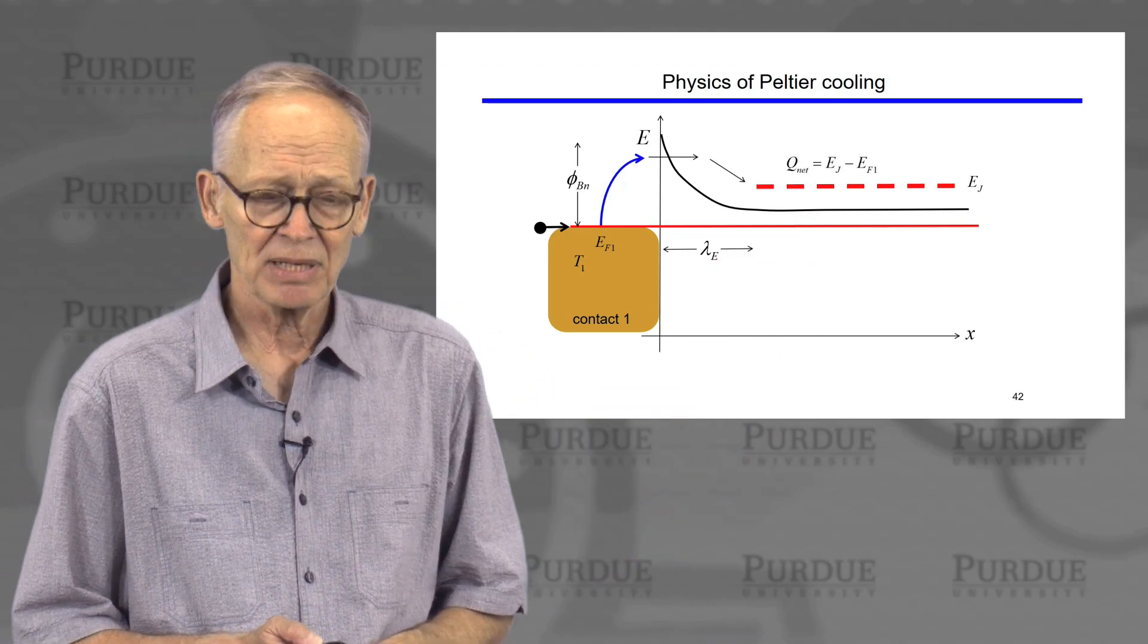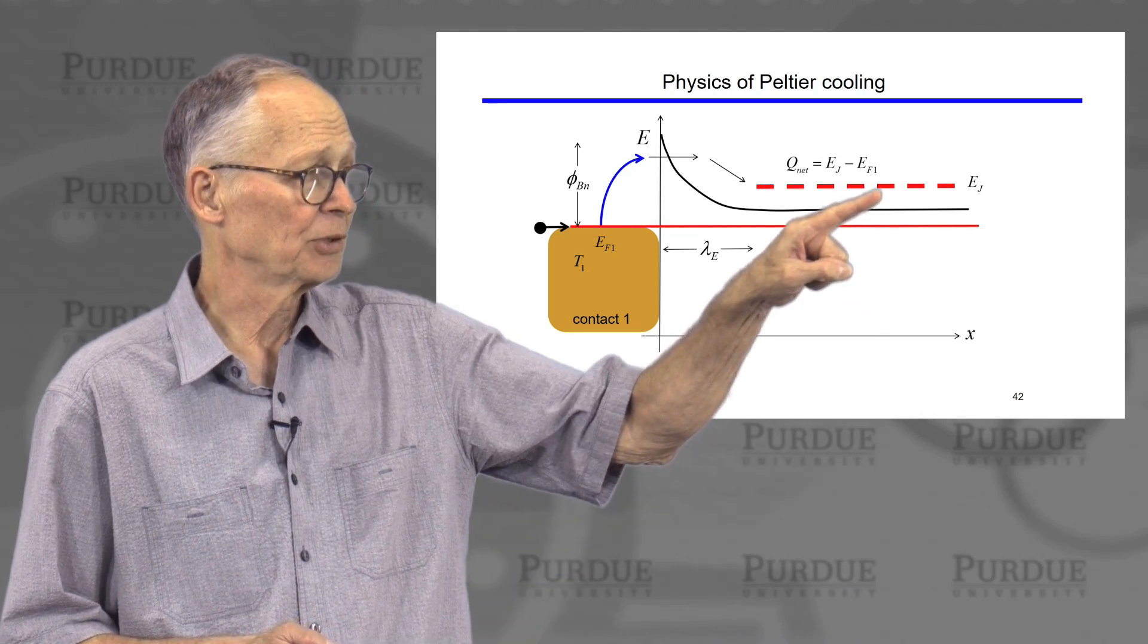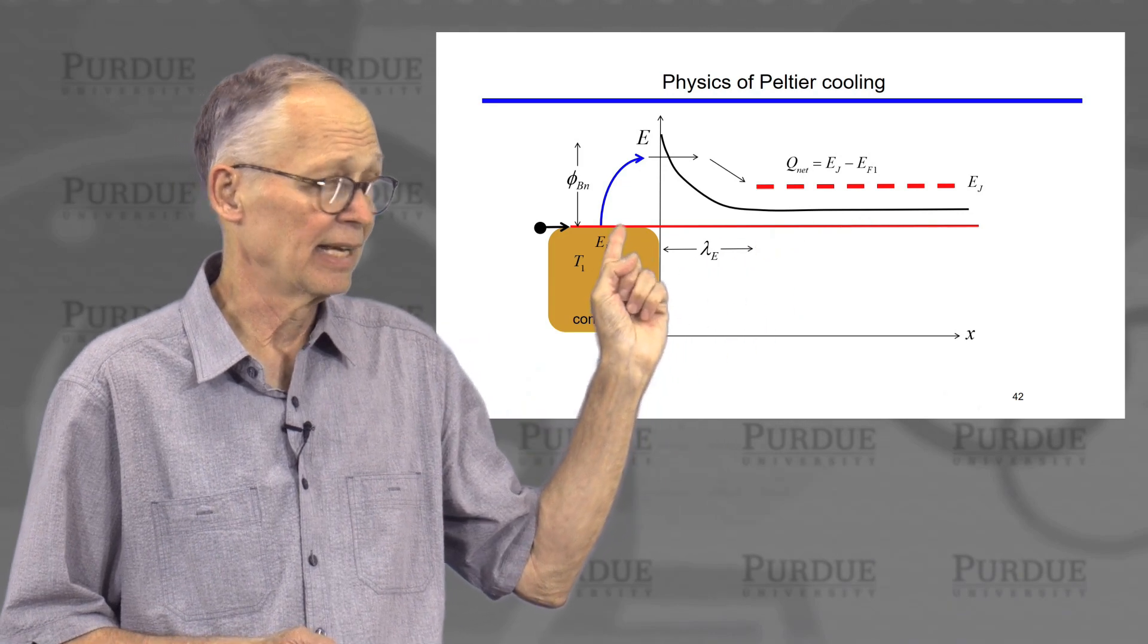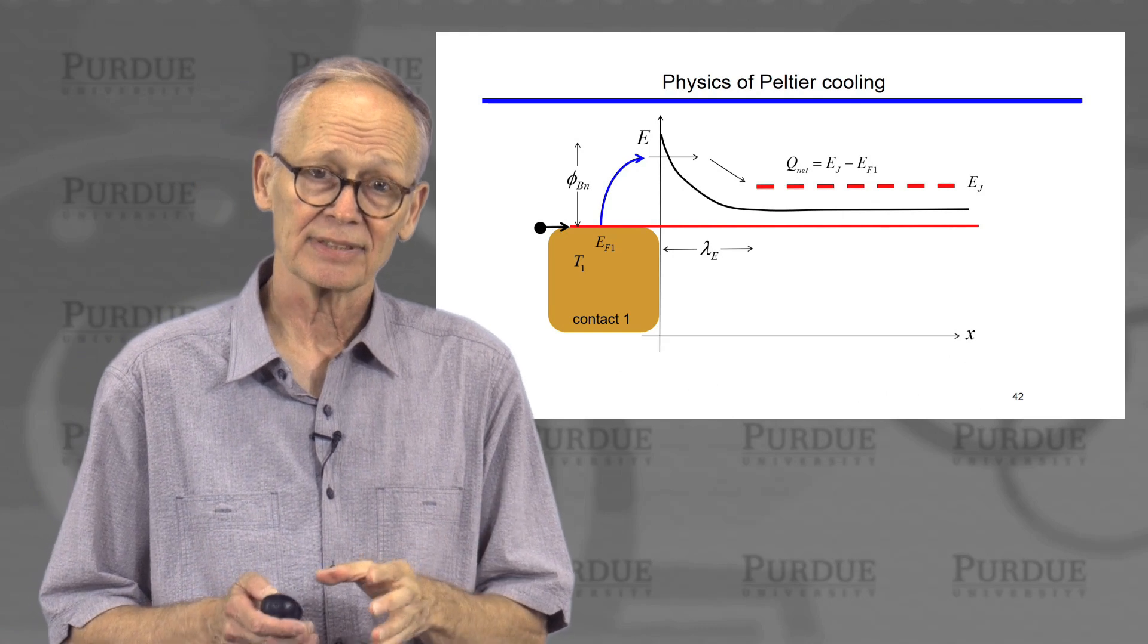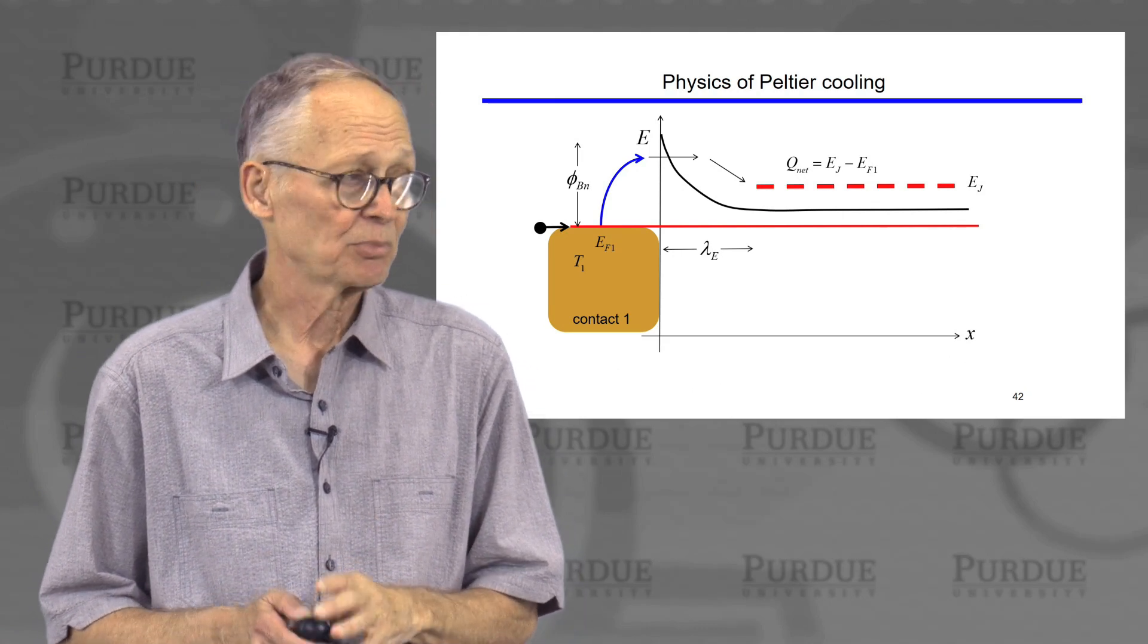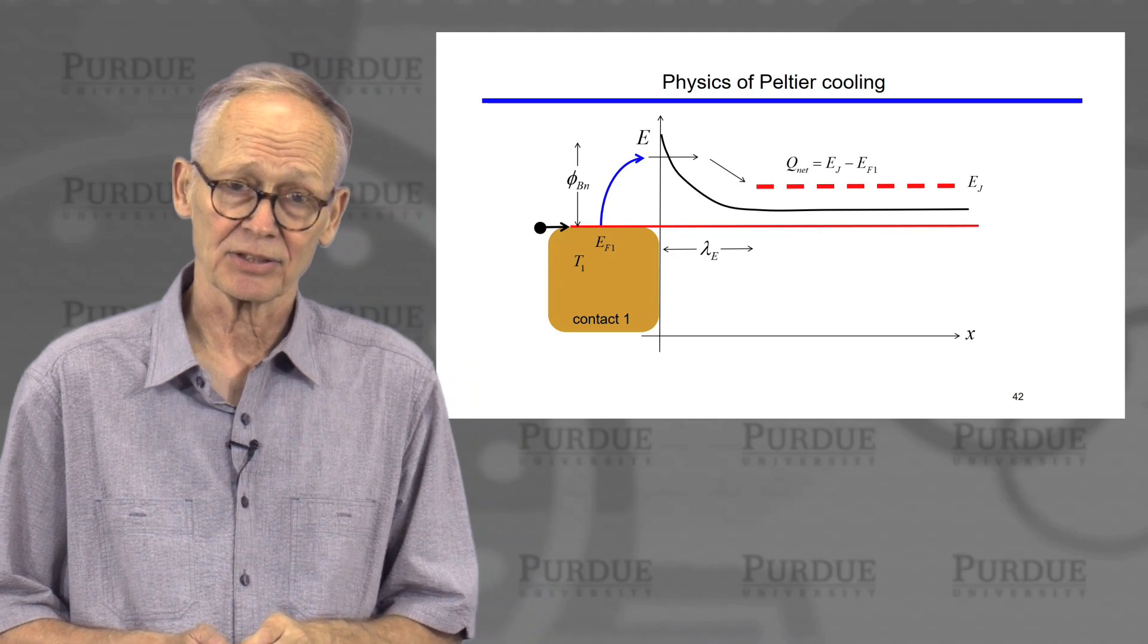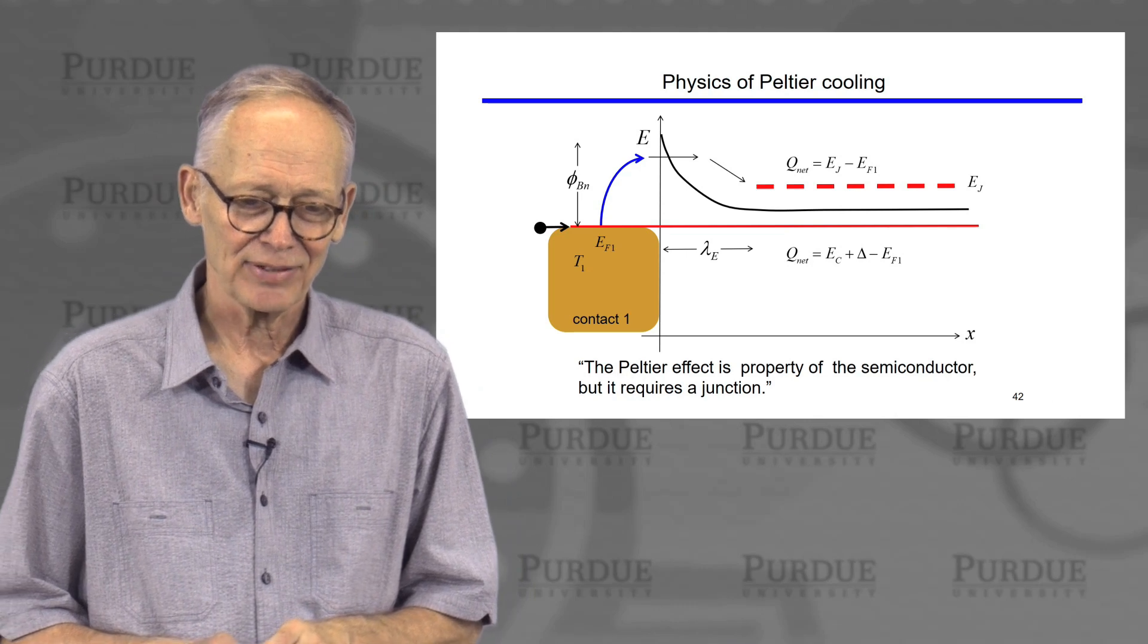the net amount of heat, is just the difference between the energy in the semiconductor and the Fermi energy in the metal. So it is a property of the semiconductor, not a property of the details of what's happening at the metal semiconductor contact. So this is an interesting effect.